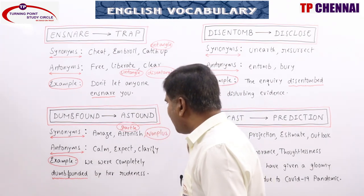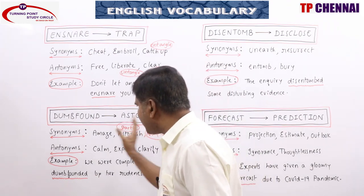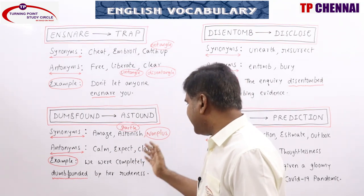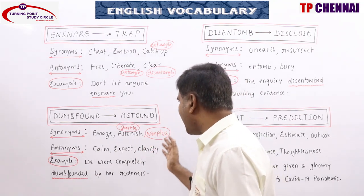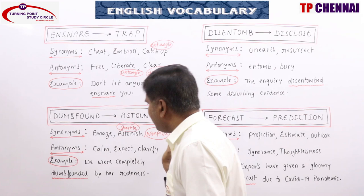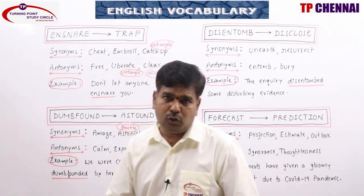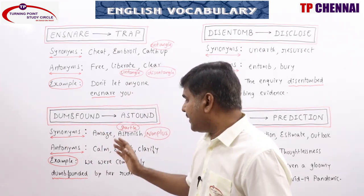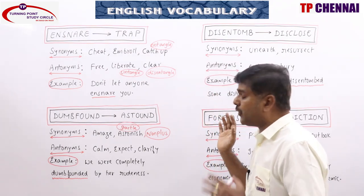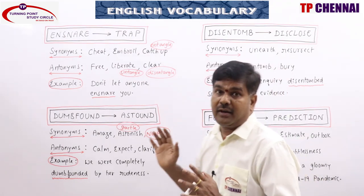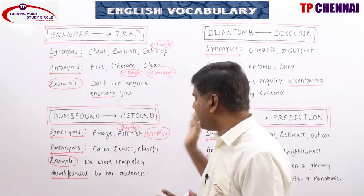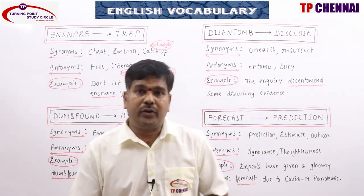Also flabbergast. All these words relate to synonyms. Antonyms of dumbfound: calm, expect, clarify, enlighten, lay out, explain. Example: We were completely dumbfounded by her rudeness — never expected.